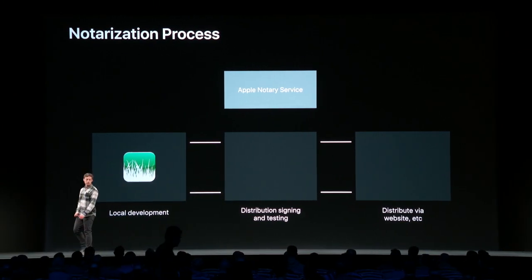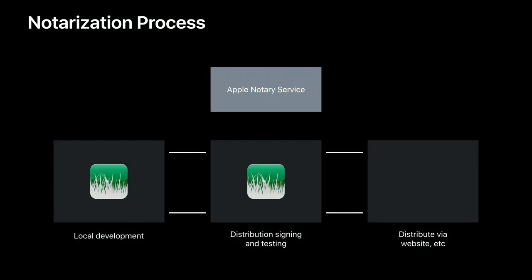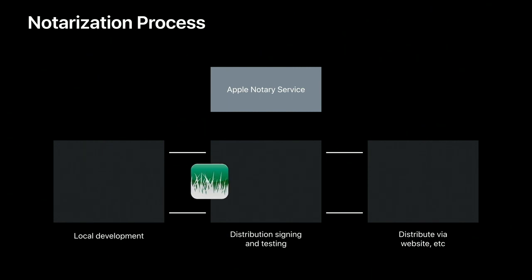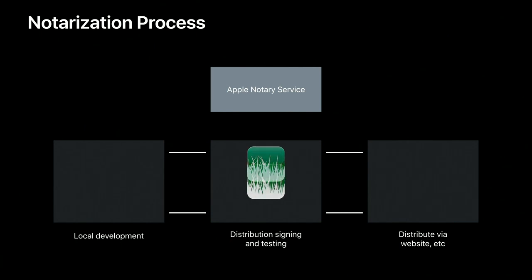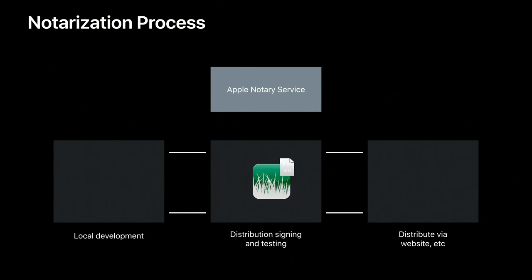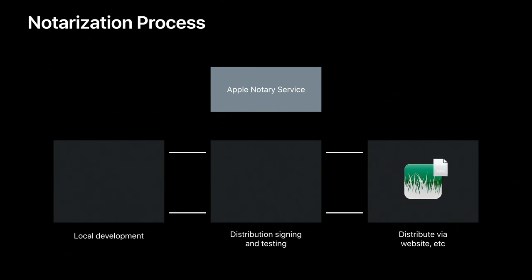Here's a diagram that talks about what the development workflow can look like. Local development remains completely unchanged — you build and sign at your desk using your Apple developer certificates until you have a release candidate. At that point, you sign the software with your developer ID certificate and send a copy to the Apple notary service. When notarization is complete and successful, the notary service sends back a ticket which you staple to your software prior to distribution, and the software is ready for distribution just like before.